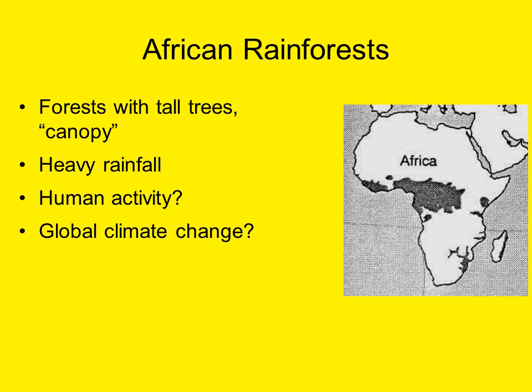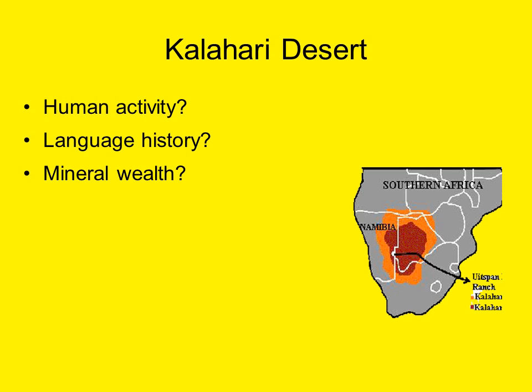Moving further south, we look at the Kalahari desert region. In some places it's not quite a true desert — more like a very dry savannah. A significant amount of pastoralism, especially cattle herding, occurs in the Kalahari basin. There is also a vast mineral wealth in the region — diamonds, tin, copper, and gold can be found there — and the competition for rights to extract these minerals has led to significant conflict, especially in recent centuries.